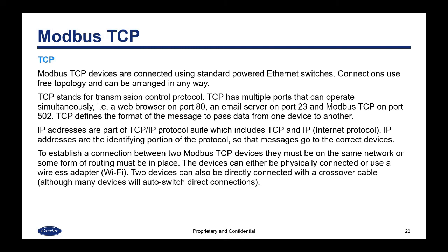TCP defines the format of the message to pass data from one device to another. IP addresses are part of the TCP/IP protocol suite, which includes TCP and IP (the Internet Protocol). IP addresses are the identifying portion of the protocol so that messages go to the correct device. To establish a connection between two Modbus TCP devices, they must be on the same network where some form of routing is in place. The devices can either be physically connected, use a wireless adapter, or connect via Wi-Fi. Two devices can also be directly connected with a crossover cable, although many devices will auto-switch direct connections.